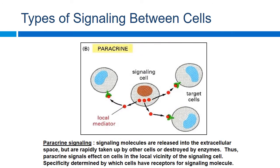We can have paracrine signaling, where some sort of molecule is released from the host cell and is able to target cells that are relatively close to it. It could be different tissue types, but it doesn't have to travel very far in order for that cell signaling to occur — it's within the local vicinity.